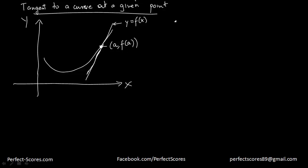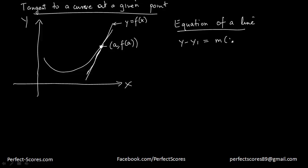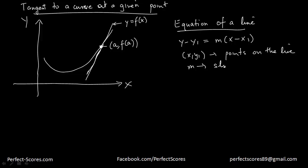Now, the equation of a line can be given as y minus y1 equals m times x minus x1, where x1 and y1 are the points on the line and m is the slope of the line.